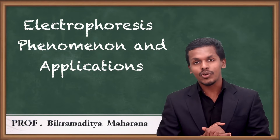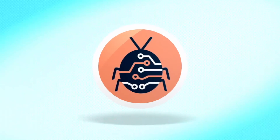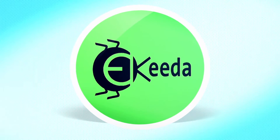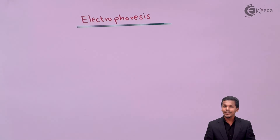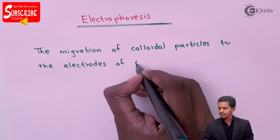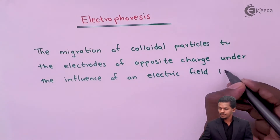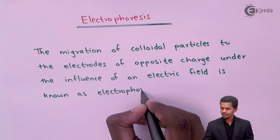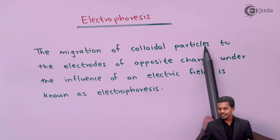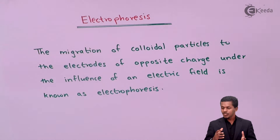Depending on that, we are going to talk about electrophoresis — what it is, the phenomena behind it, and its applications. The definition of electrophoresis is: the migration of colloidal particles to electrodes of opposite charge under the influence of an electric field is called electrophoresis.